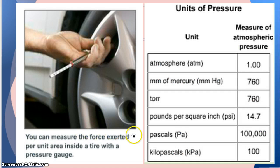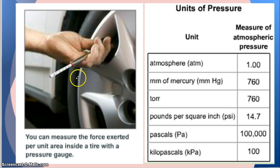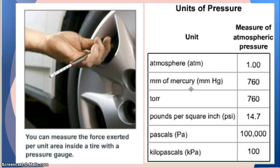Another example: think of your car tires. You can measure the force exerted per unit area inside a tire with a pressure gauge. You know when you put it on the nozzle, a part comes out until it reaches equal pressure as the air inside the tire, and it tells you the air pressure — measured in psi, or pounds per square inch. In chemistry, we can also measure pressure in atmospheres, millimeters of mercury, torrs, pascals, or kilopascals.